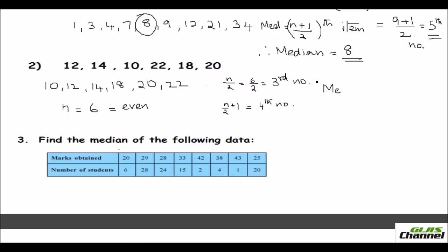So median is equal to, third number is what? 14. This is equal to 14 and the fourth number here is 18. So median will be 14 plus 18 over 2. So that will give you 32 over 2 and the median is 16. 16 is your answer. So this is how when the list of numbers are given.